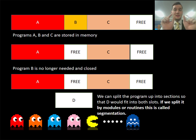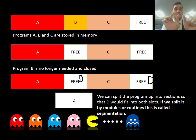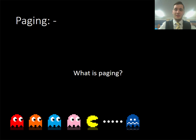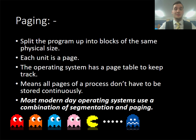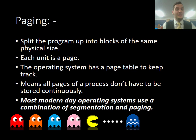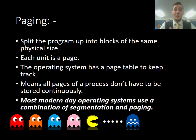Instead, we can split the program into small sections so that D can fit into both slots — a bit of D here and a bit of D there. Splitting the modules or routines of a program into smaller chunks to fit around available free memory is called segmentation. The alternative is paging, where you split the program into blocks of the same size — for example, a 10 megabyte file into ten 1 megabyte pages. The operating system keeps a page table to track where everything is. This means the program doesn't have to be stored continuously. Most modern operating systems use a combination of segmentation and paging.